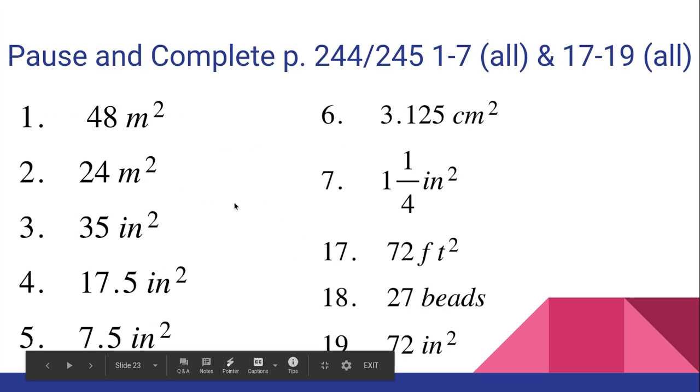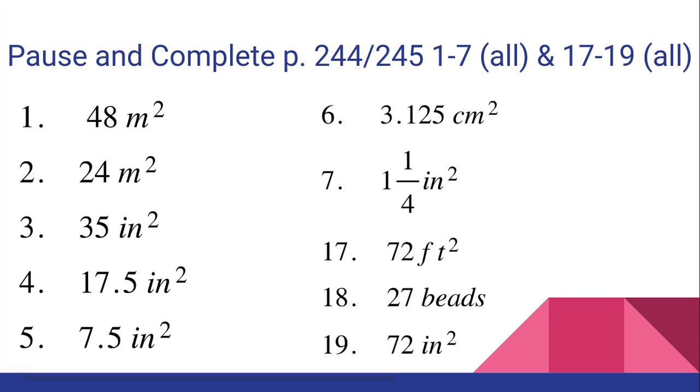All right, number one was a parallelogram. So we just did eight times six, which is 48 meters squared. Number two was a triangle. So we do our eight times six, which is 48, and then we have to divide that by two. So 24 meters squared.